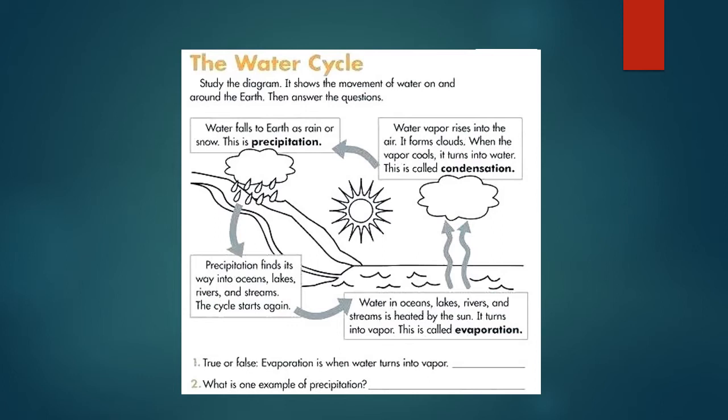Water falls to Earth as rain or as snow, and this is called precipitation. Precipitation finds its way into oceans, lakes, rivers and streams, and then the cycle starts all over again.